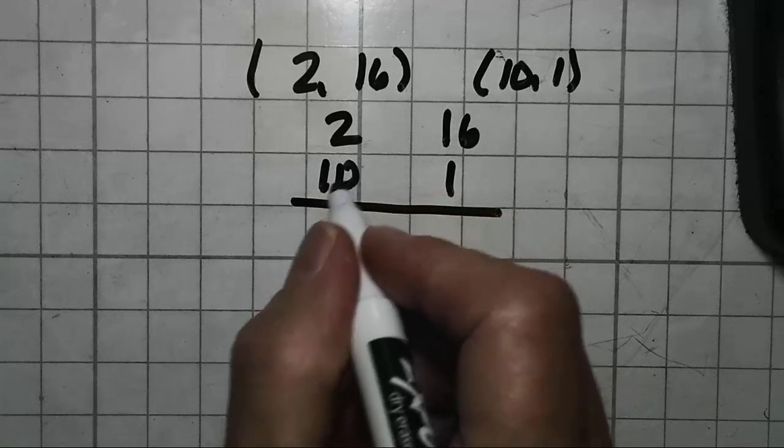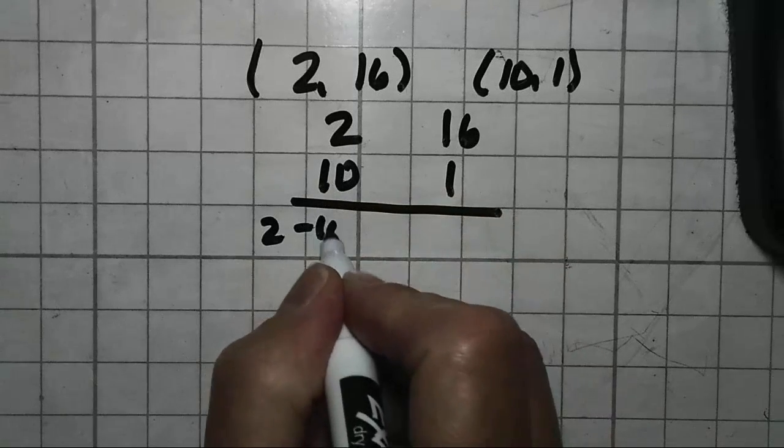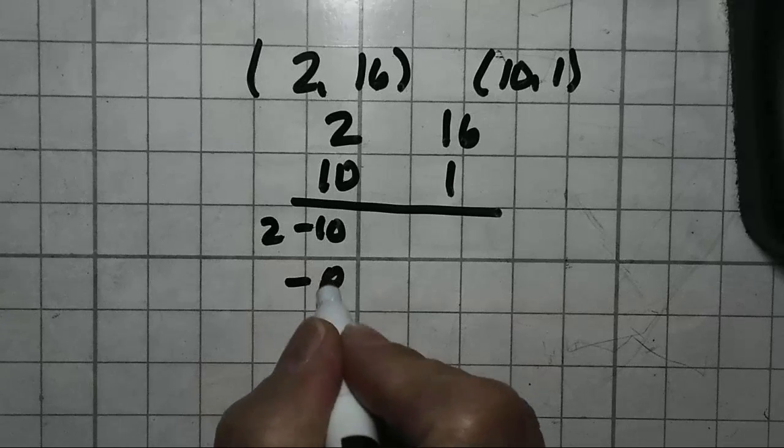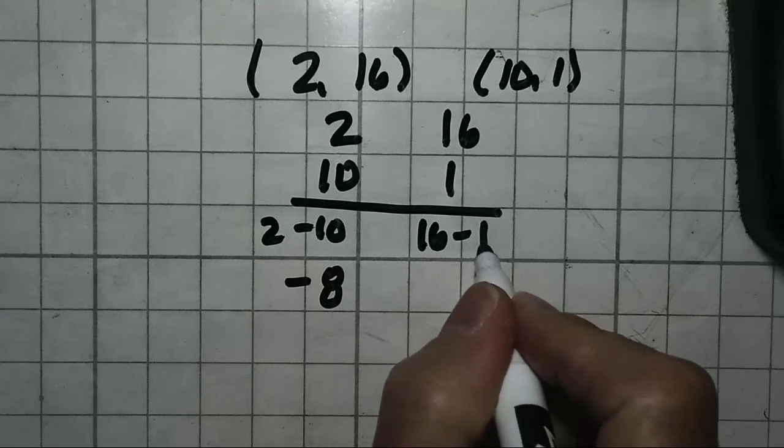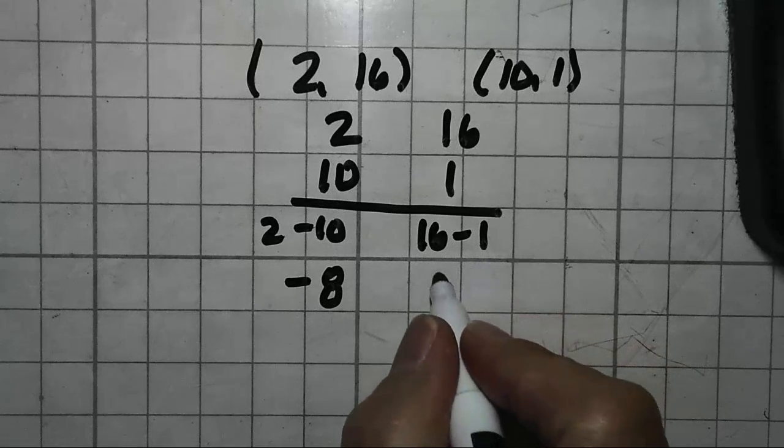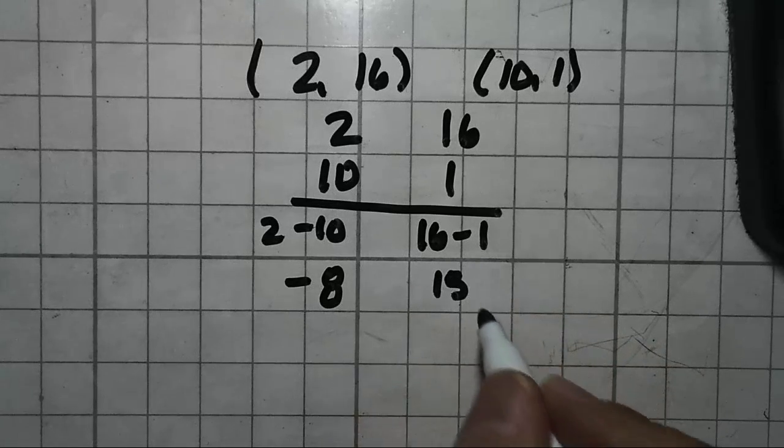Top number minus bottom number. So 2 minus 10. 2 minus 10 is negative 8. Top number minus bottom number. 16 minus 1. 16 minus 1 is 15.